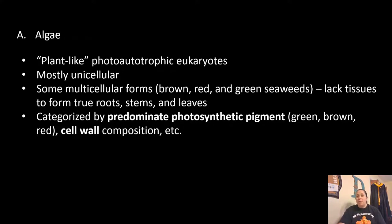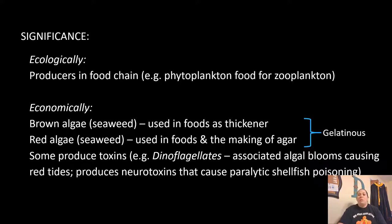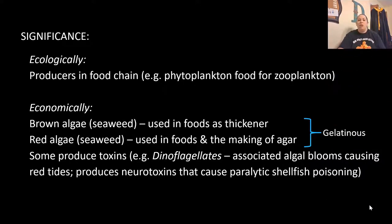They are also put into categories based on their cell wall composition. Why do we need to talk about algae? Economically, they are the producers in the food chain in the ocean — phytoplankton is the food for zooplankton, so they are the basis of the marine food chain.